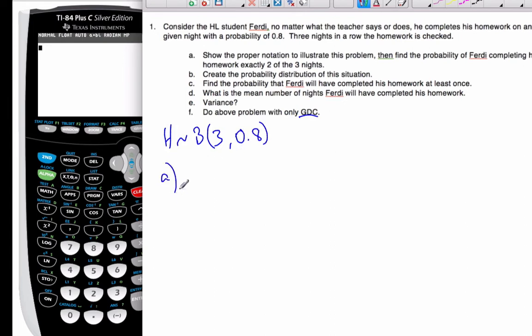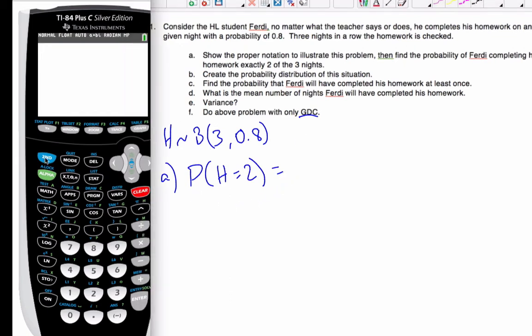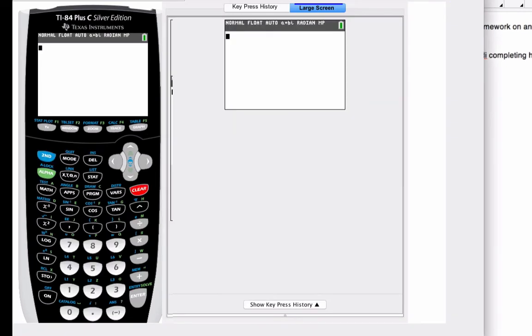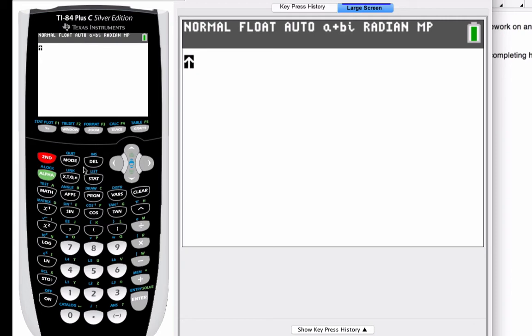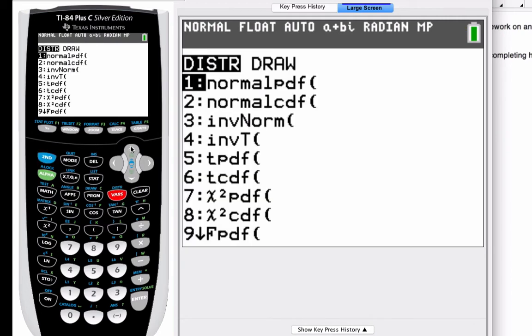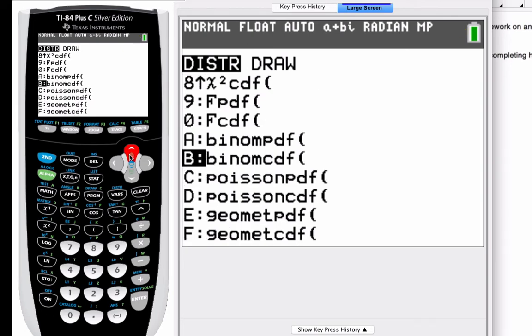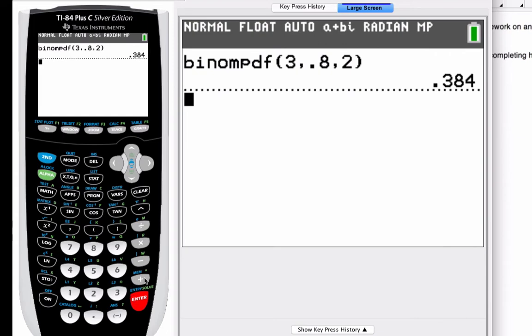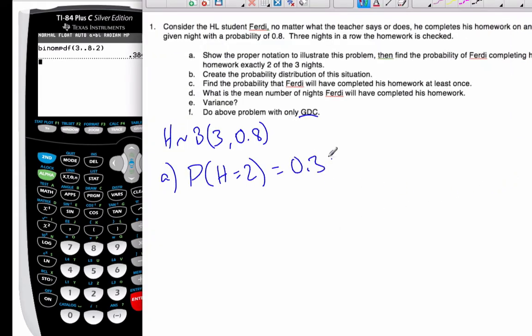Part A is find the probability he completes exactly two out of three nights. So probability that H is equal to 2. To do this with my calculator, I go to second variables of the distribution. I'm going to go to binomial PDF. I know that there are three trials. That's the N. The probability of success is 0.8. And I know I'm going to do it two times of homework, successful homework. I hit paste it, I hit enter, and I get 0.384.